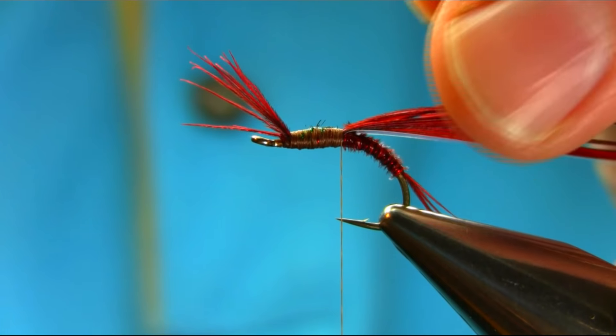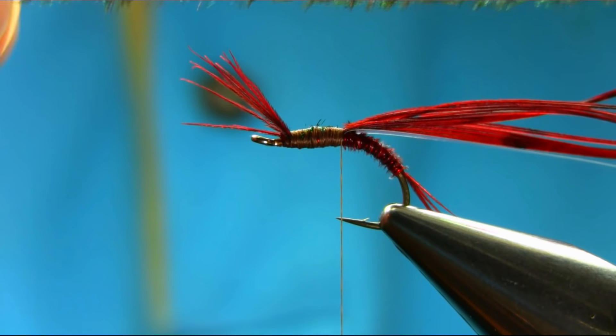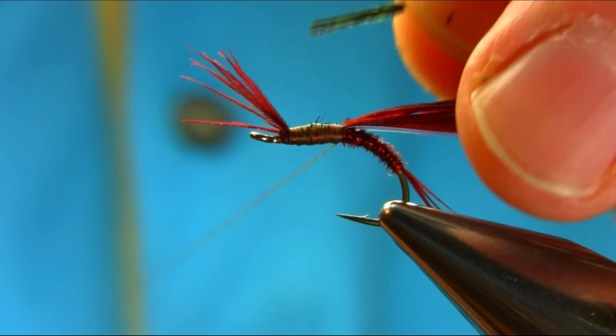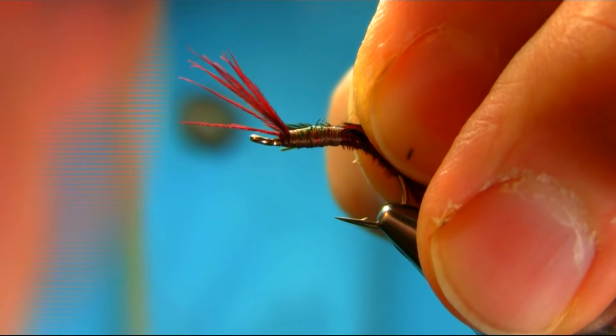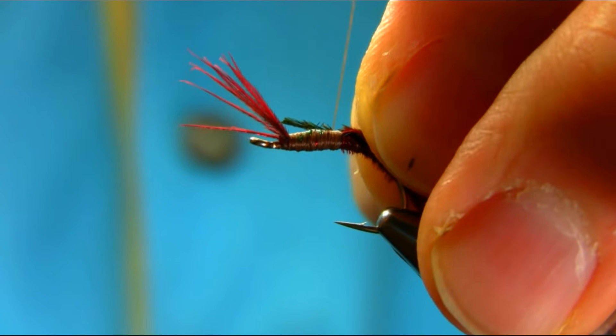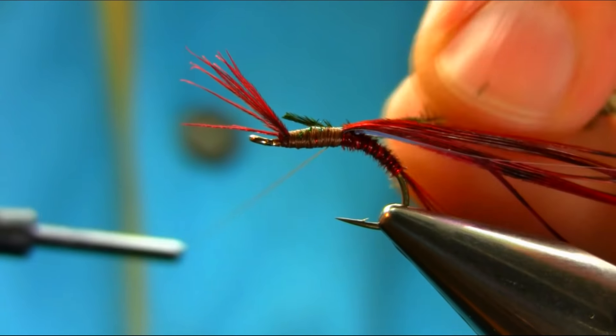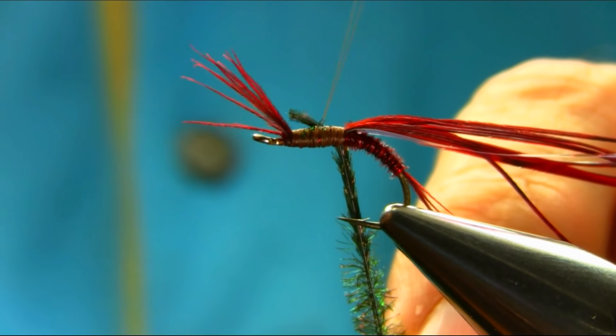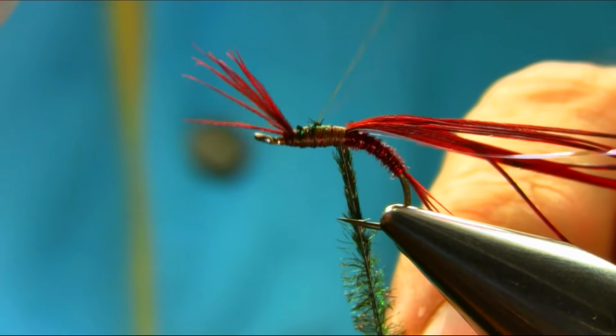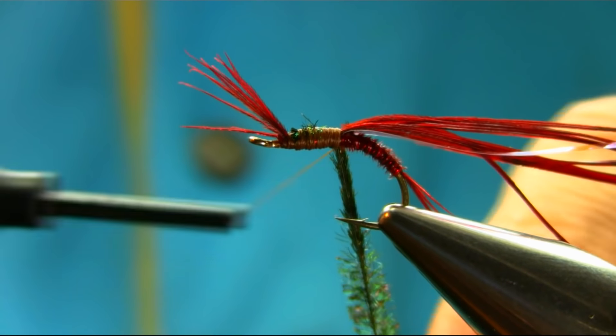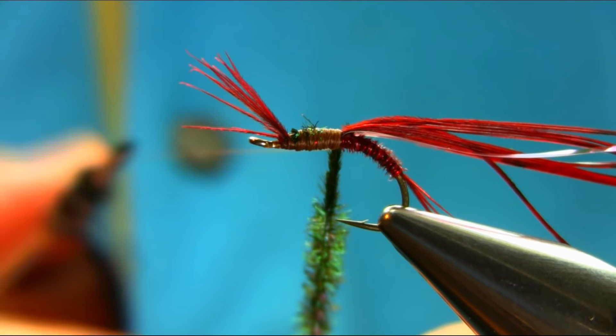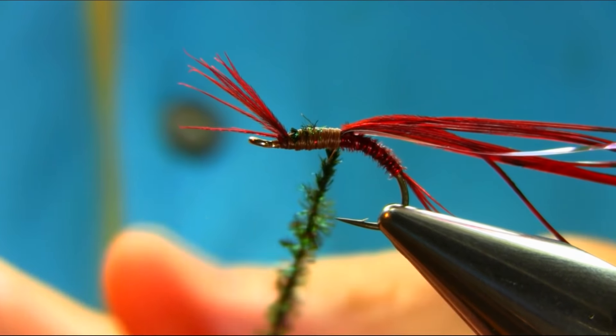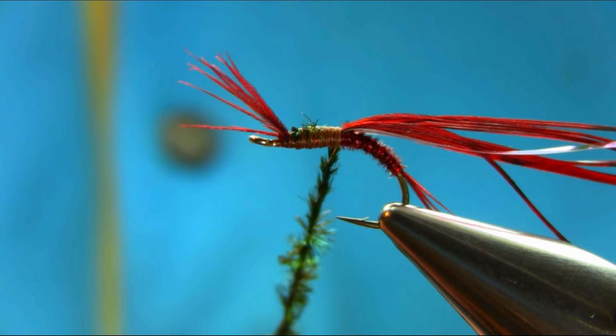And also I'm going to be adding peacock herl. These are dyed green. Two strands. So just catch them. Just keep them down actually, parallel to your thread, because I'm going to spin them around along with the thread. I mean, you can put them on without spinning, but just for security, if you spin these along with your thread, anti-clockwise.